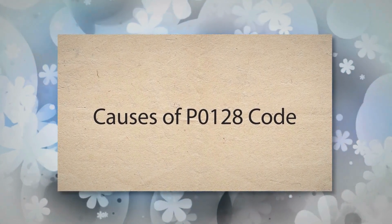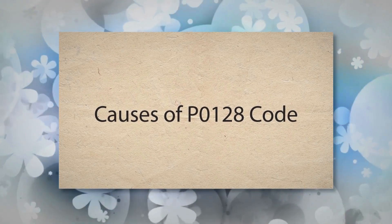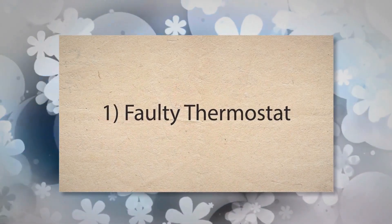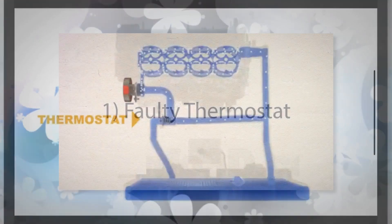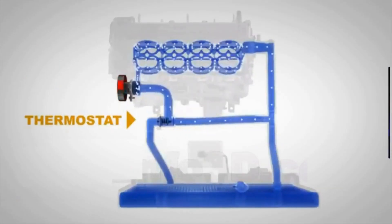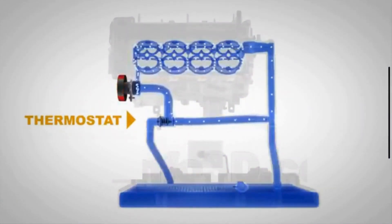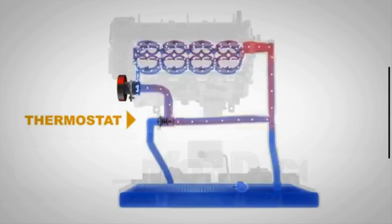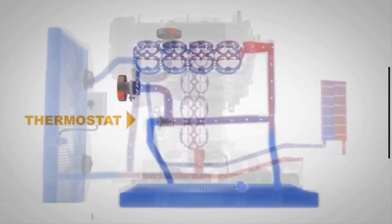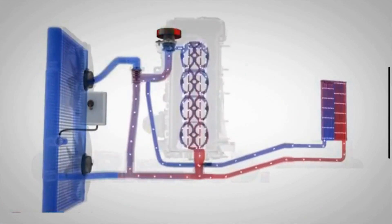Causes of P0128 code. 1. Faulty thermostat — the thermostat controls the flow of coolant to the radiator. If the thermostat is stuck open, it can cause the engine to run cooler than normal. Such conditions prevent the engine from reaching its optimal operating temperature.